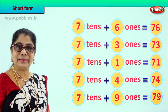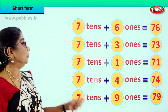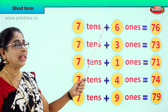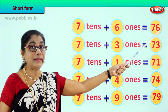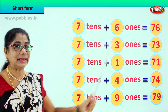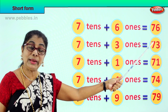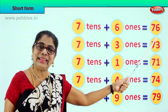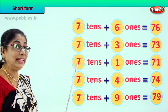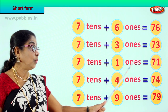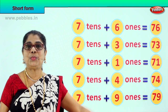Let's read together. I hope you are enjoying the short form. 7 tenths plus 6 ones is equal to? 76. 7 and 6? 76. 7 tenths plus 3 ones is equal to? 73. 7 and 3? 73. 7 tenths plus 1 one is equal to? 7 and 1? 71.